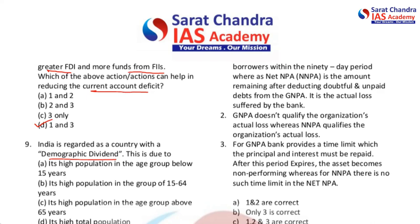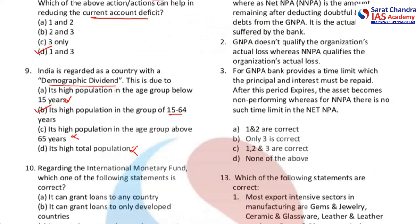Any population in the group of 15 to 64 years is considered the most productive. Demographic dividend is: A, high population in the age group below 15 years — wrong; B, high population in the group of 15 to 64 years — correct; C, high population above 65 years — wrong; D, total high population — also wrong, because even with high total population, if aged or very young people dominate over the middle bracket, it is not considered demographic dividend. The answer is B.